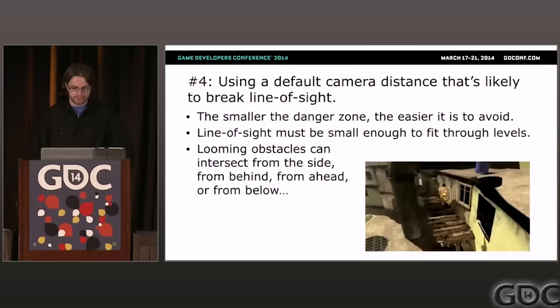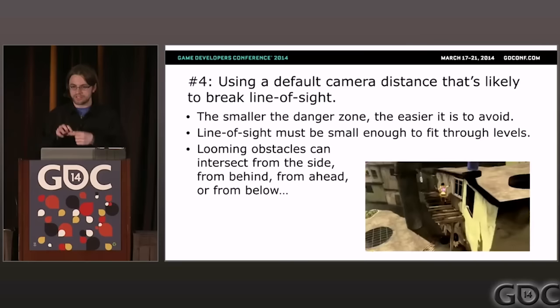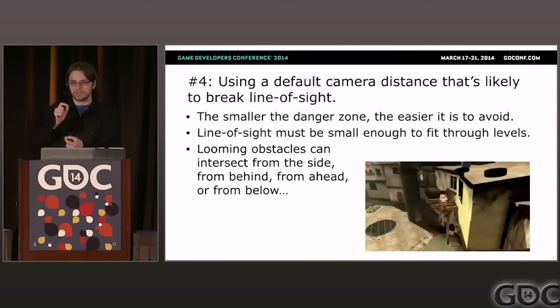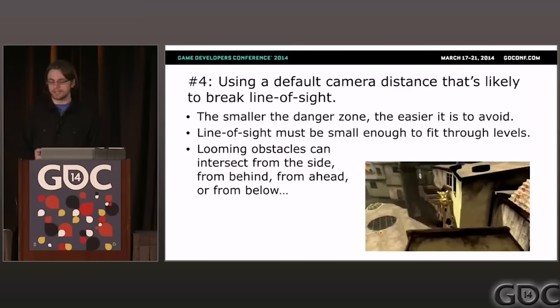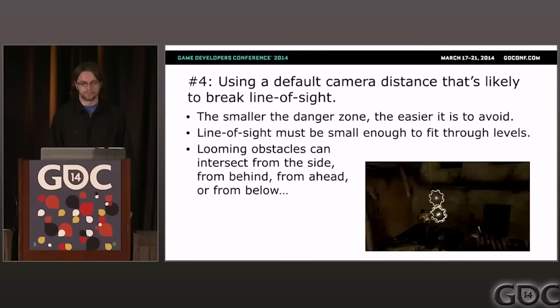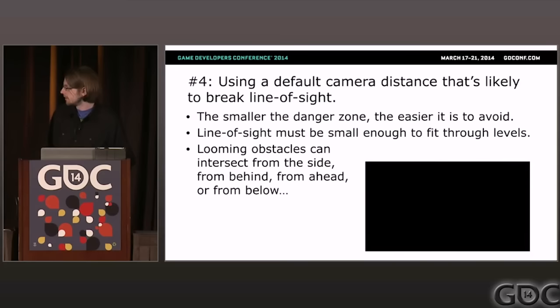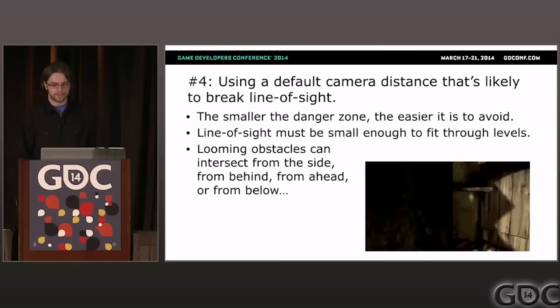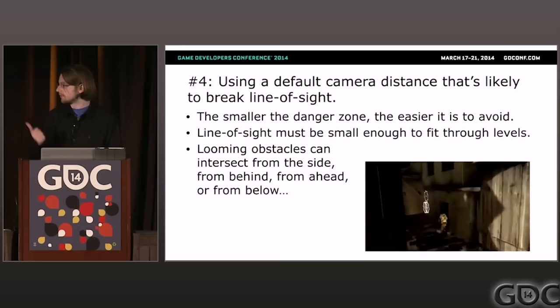Problem four: using a camera distance that's likely to break line of sight. The imaginary line between the camera and the avatar is crucial — quite a lot of camera code is basically designed around keeping this line of sight clear. Here's an example from Papo & Yo: this game fails to preserve line of sight, as you can see with this pipe on the left. If the camera were closer to the avatar by default, it would be a lot harder for this sort of problem to occur.